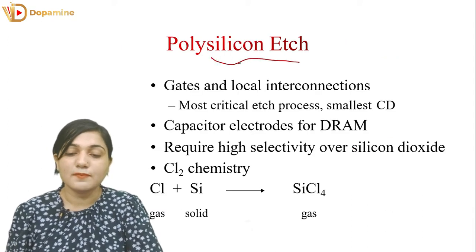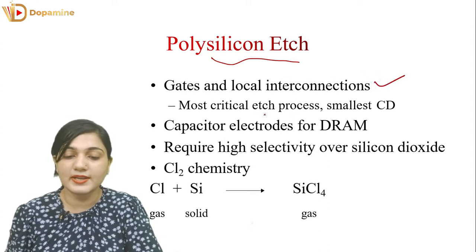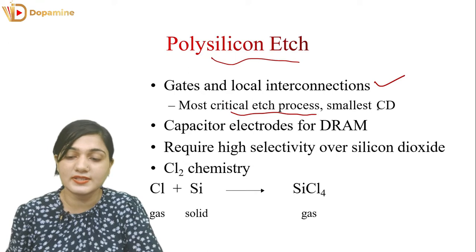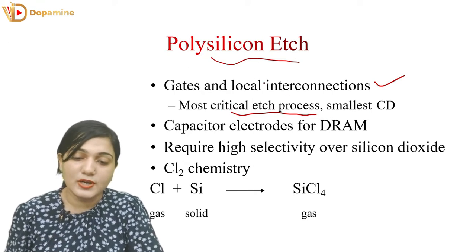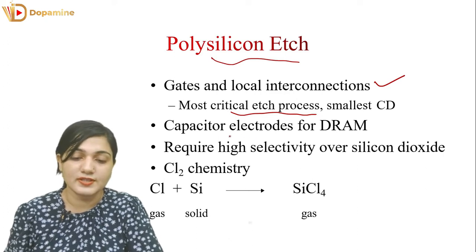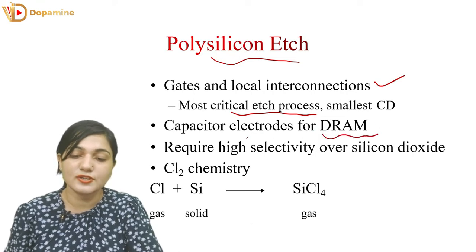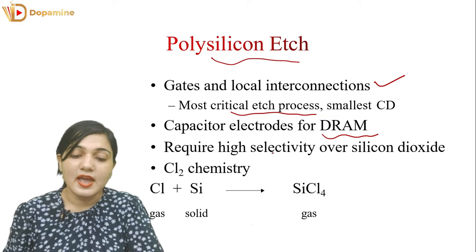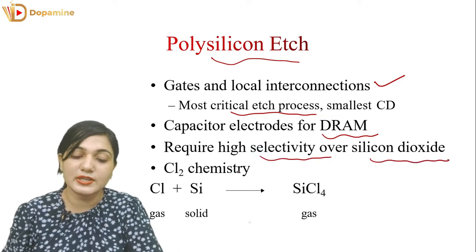Coming to poly-silicon etch. Poly-silicon etch is used to form gates and local interconnections — it is the most critical etching process. Here we have to create the smallest CD layer, so for the smallest feature size, we do poly-silicon etching. We can also create capacitor electrodes for DRAM from poly-silicon etch. High selectivity over silicon dioxide is required, and we use chlorine chemistry: Cl + Si gives SiCl4.